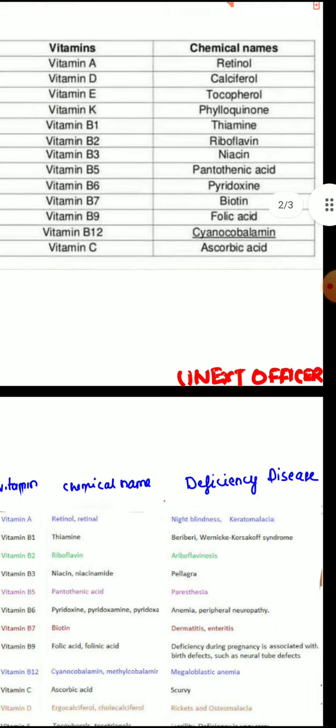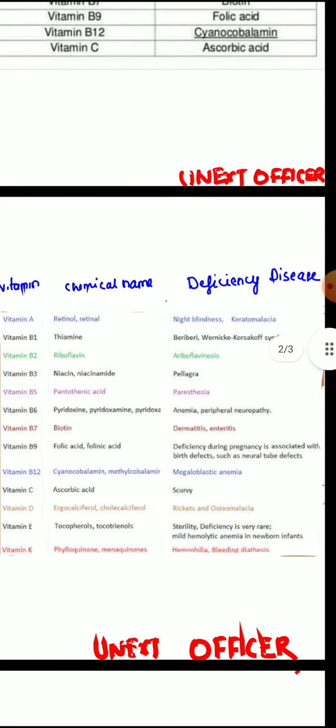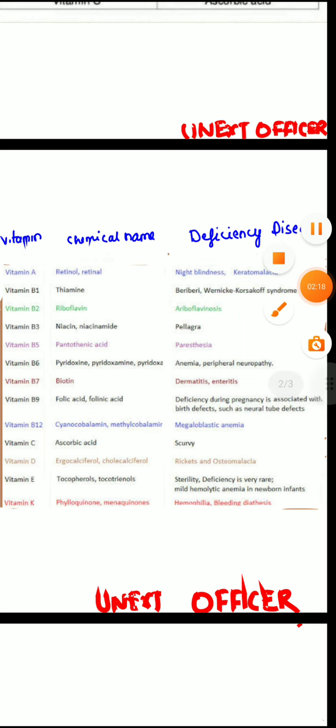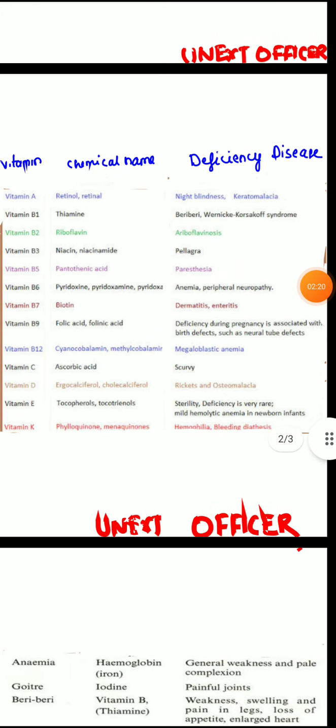Now, let's study about the deficiency disease caused by each of these vitamins. Vitamin A deficiency, that is retinol deficiency, causes a spectrum of disease called xerophthalmia, which includes night blindness — difficulty in vision in dim light — Bitot's spots, which are white triangular spots of the conjunctiva, and keratomalacia, which is dryness of the cornea.